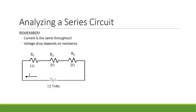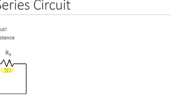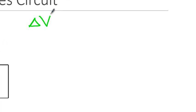Let's look at this series circuit. We have 12 volts being supplied by the battery, and three resistors in series: a 1 ohm resistor and two 2 ohm resistors. We know that the current is the same at all points in our circuit, but the voltage drop depends on the resistance. Using the loop rule, the voltage supplied by the voltage source is equal to the sum of the voltage drops across each resistor.